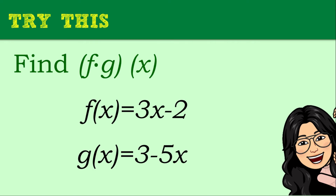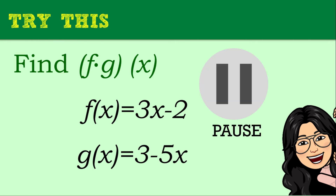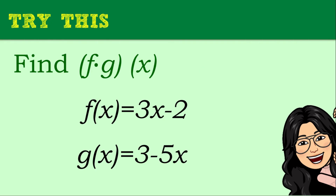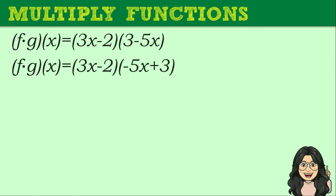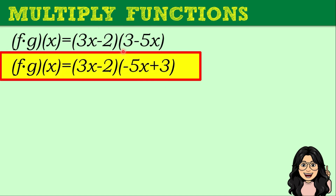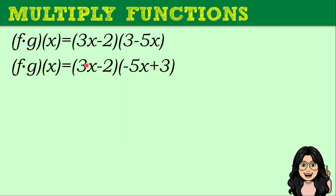Let's try another item. If f(x) = 3x − 2 and g(x) = 3 − 5x, find f times g of x. You may pause this video and take your time. For g(x), we rearrange to decreasing order of degree: negative 5x + 3. Here, both f(x) and g(x) are binomials, so we are multiplying two binomials — you can use the FOIL method, or follow the distribution steps.